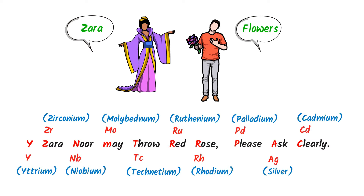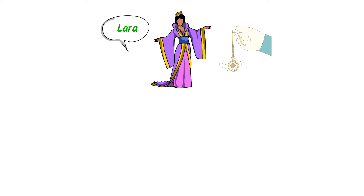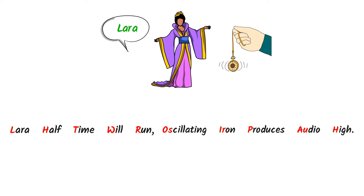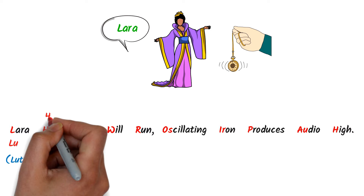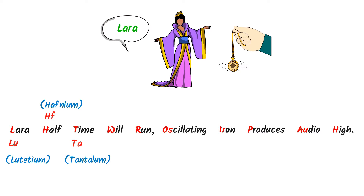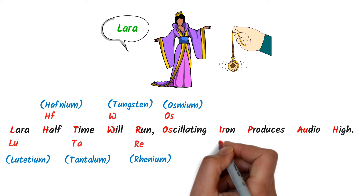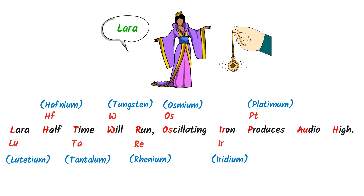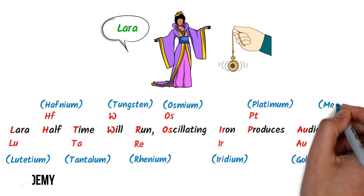Thirdly, consider a famous actress Lara. She is making noise while watching a movie. I say: Lara, half time will run, oscillating iron produces RU high. Here, Lu stands for Lutetium, Hf stands for Hafnium, Ta stands for Tantalum, W is the symbol of Tungsten, Re stands for Rhenium, Os stands for Osmium, Ir stands for Iridium, Pt stands for Platinum, Au is the symbol of Gold, Hg is the symbol of Mercury. This is the third column of transition elements.